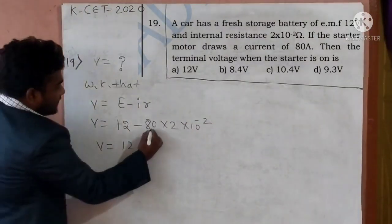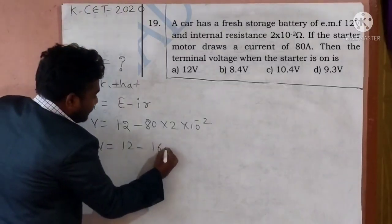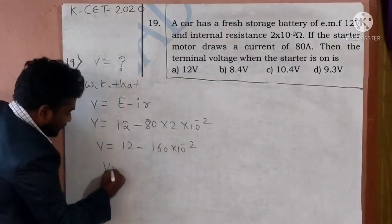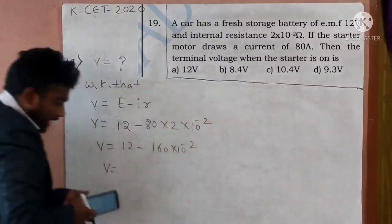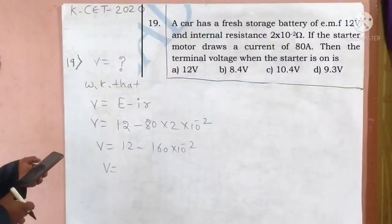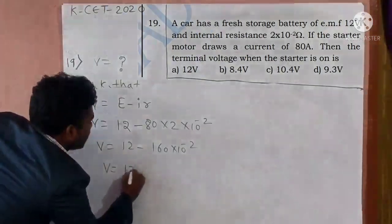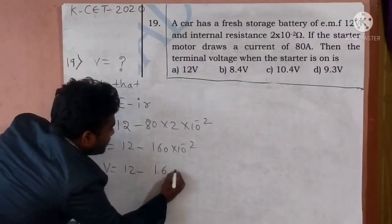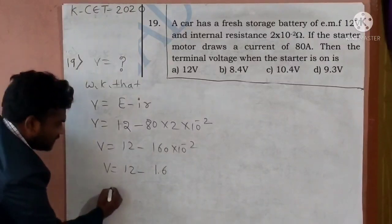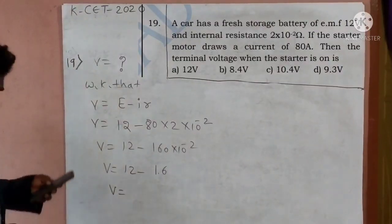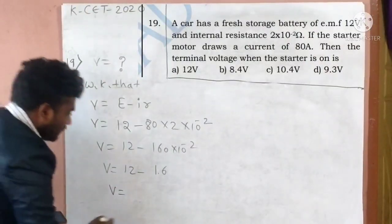In calculation, 12 minus 80 into 2 into 10 raised to minus 2. We are going to get the answer is around how much? Yes, 10.4. 12 minus 1.6.